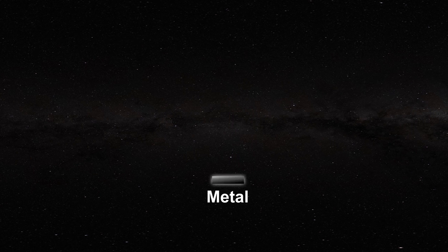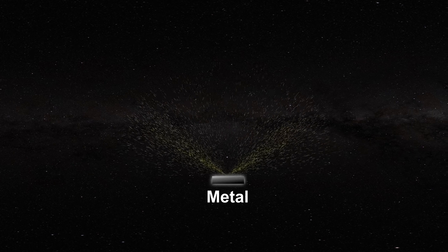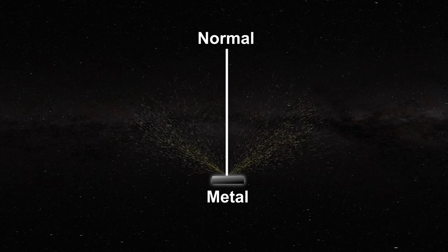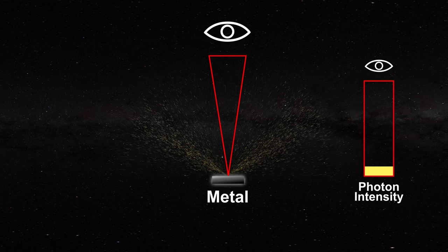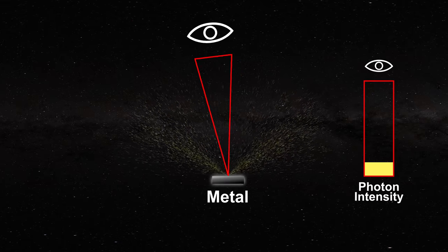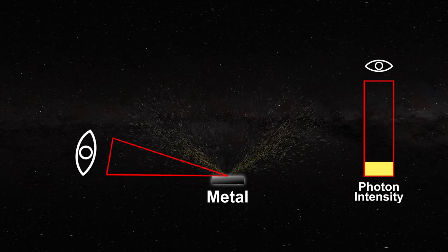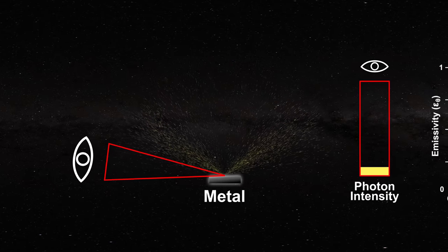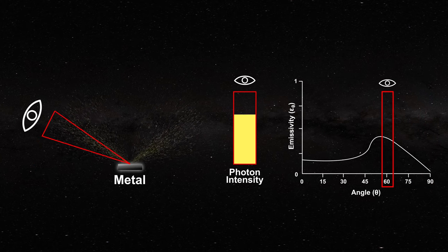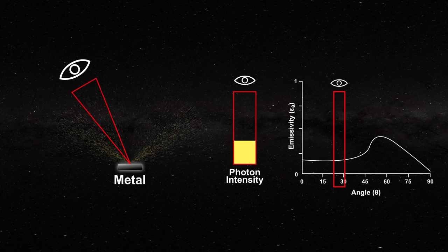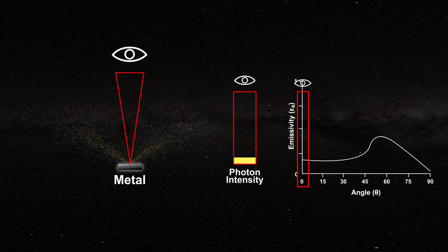Interestingly, metals are very different. Metals typically have a lower emissivity at the normal than a non-metal. However, as we move away from the normal the emissivity rises to a certain maximum before falling rapidly. This difference between metals and non-metals is important to understand the emissive properties of the photosphere and its structures.